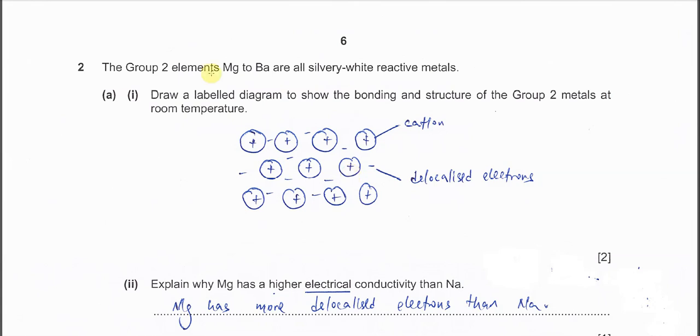Question 2: the Group 2 elements magnesium to barium are all silver-white reactive metals.